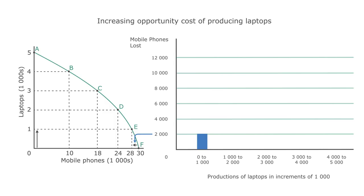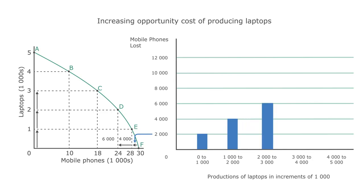An increase in the production of laptops from 1,000 to 2,000 results in 4,000 fewer mobile phones being produced. And if we increase the production of laptops by another 1,000, this results in a further 6,000 fewer mobile phones being produced. Moving from point C to point B, the opportunity cost of producing laptops rises even more, and 8,000 mobile phones must be sacrificed to increase the production of laptops from 3,000 to 4,000.